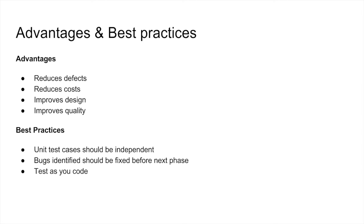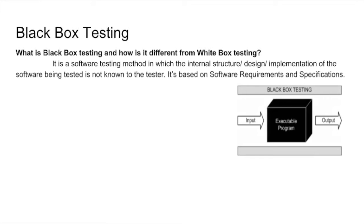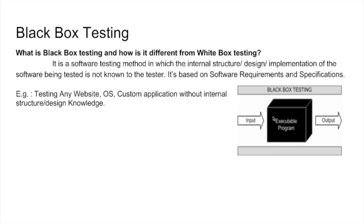Ram will next explain about black box testing. Hi, this is Ram Prashant. Now I'm going to talk about black box testing. What is black box testing and how is it different from white box testing? Black box testing is a type of software testing method in which the internal structure, design, or implementation of the software being tested is not known to the tester. In simpler terms, it is like a black box in which the tester can't see through what is happening inside, but can test it. Since the tester doesn't know what happens inside, it is purely based on software requirements and specifications. Examples include software such as an OS, a website, or any custom application — the tester can test it without any internal knowledge.